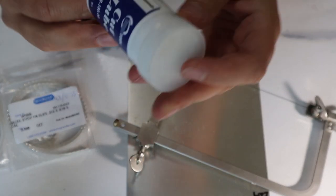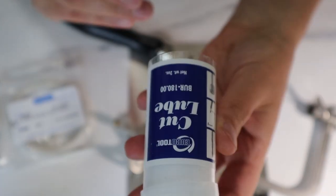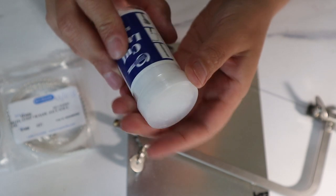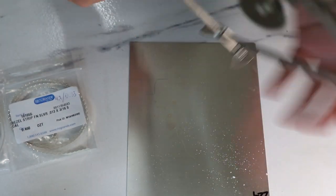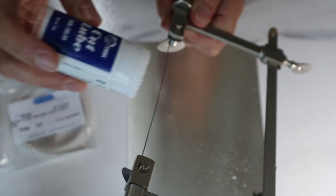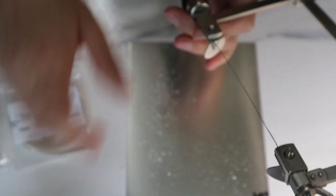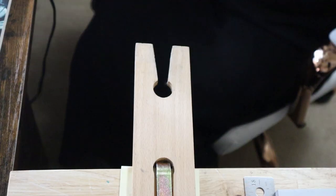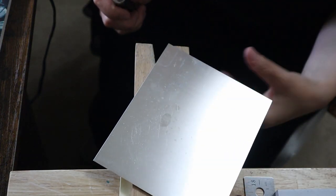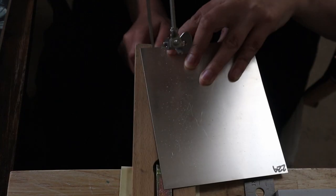I'm using a jeweler's saw. It's going to help cut out easily. Simply just apply the saw and start to cut it out. There we go. Starting to cut out the shape.